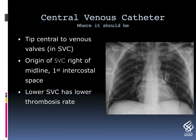Central venous catheters — where should they be? The tip should be central to the venous valves in the SVC. The origin of the SVC is usually to the right of the midline in the first intercostal space. The lower SVC has a lower thrombosis rate.